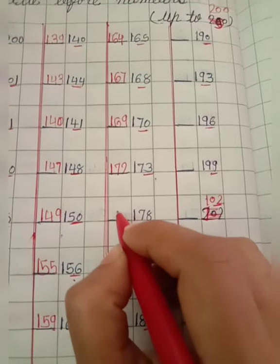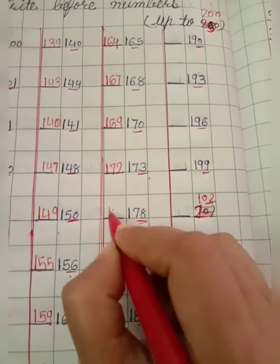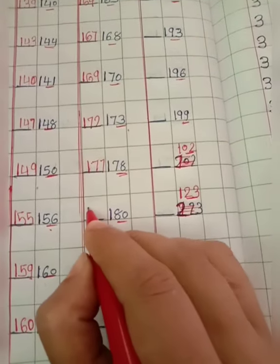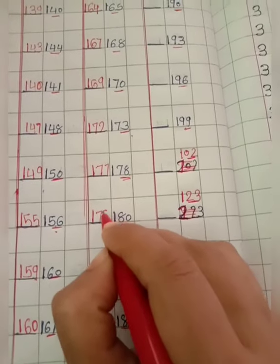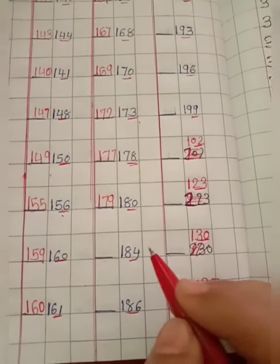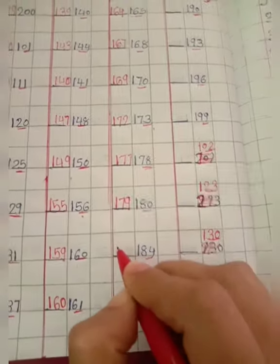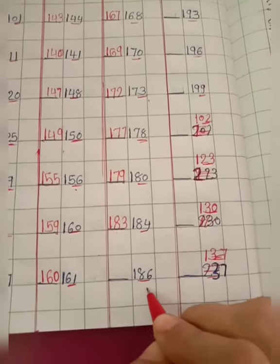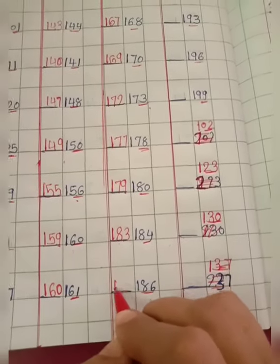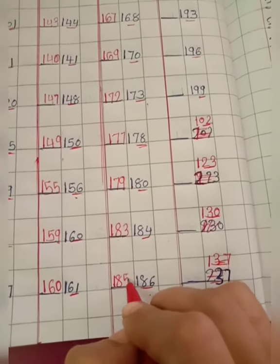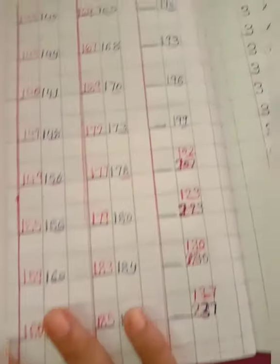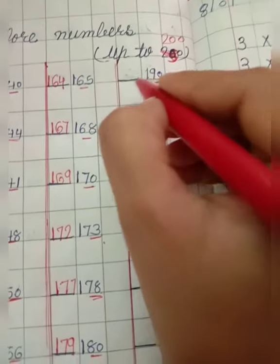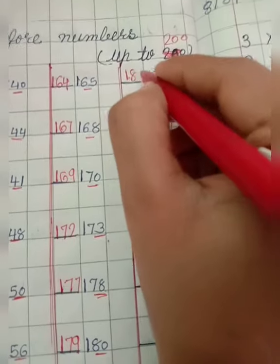78, 78 before 77, so we will write 177. 80, 80 before 79. 84 before 83, so we will write 183. 86 before 85, so we will write 185. 90, 90 before 89, so we will write 185.